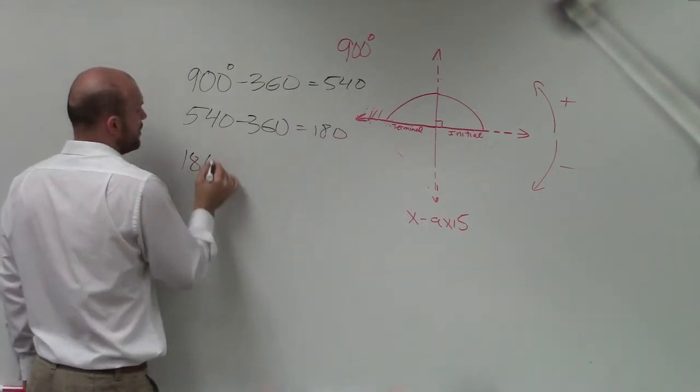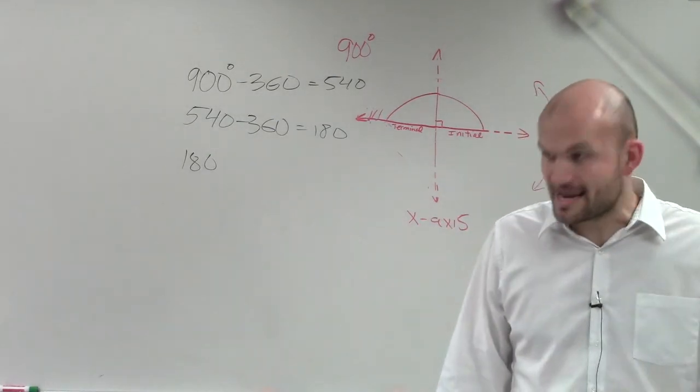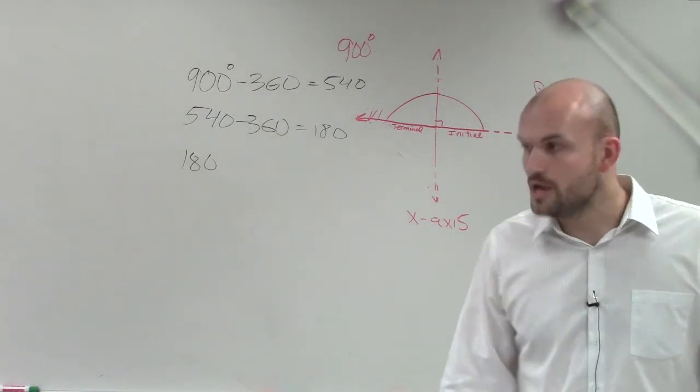So is 180 the smallest positive coterminal angle I can have? Because if I subtract 360 again, will I still have a positive angle? No.